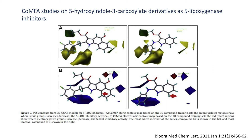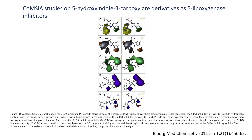The CoMFA and CoMSIA models generated for 5-hydroxyindole-3-carboxylate derivatives inhibiting lipoxygenase can be seen in the figure. Each contour is specific for one functional group and is represented in two colors, where each region shows where addition or modification of that functional group can increase or decrease the activity. For example, for steric groups representing van der Waals interactions: adding steric groups in the yellow region decreases the activity, whereas adding steric groups in the green region increases the inhibitory activity against lipoxygenase. For the electrostatic contour, the blue region shows where electronegative groups decrease the activity, whereas the red region shows where electronegative groups increase the activity. Based on this CoMFA and CoMSIA data, we can modify compounds to achieve higher binding affinity against the target protein.